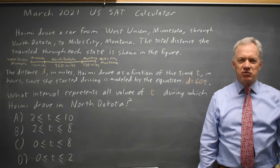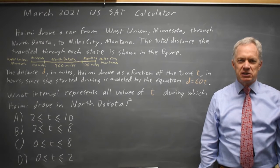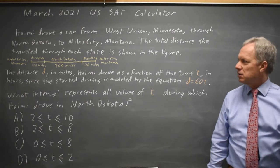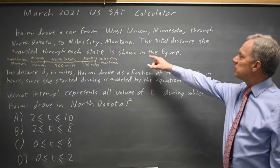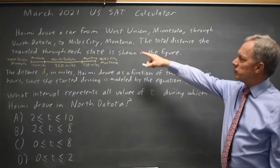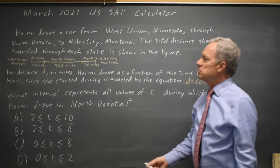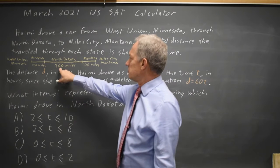I'm Dr. Roger and this question is from the March 2021 U.S. SAT calculator section. The College Board is asking about a drive from Minnesota through North Dakota to Mile City. So this middle section here is North Dakota.